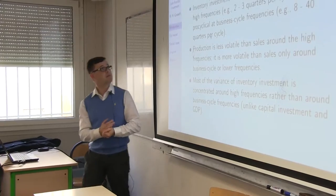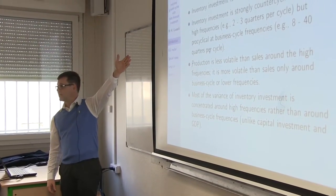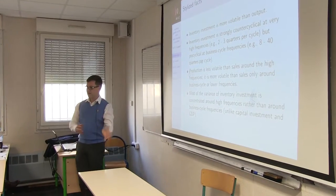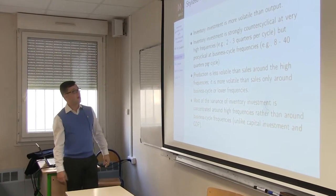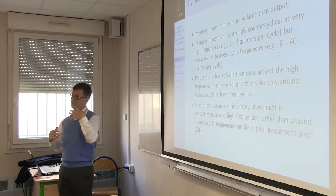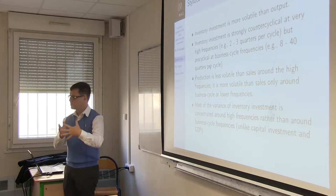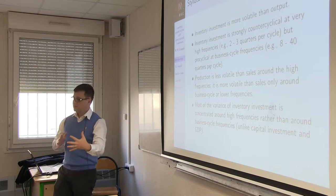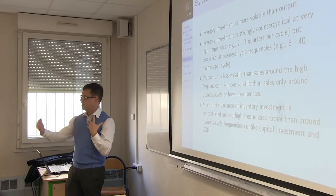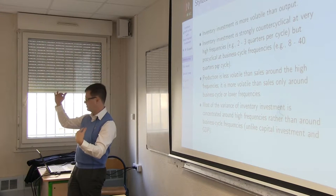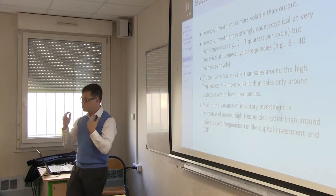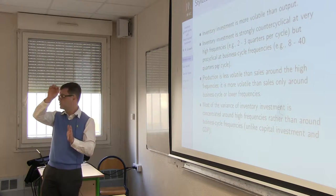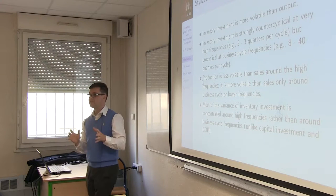The first stylized fact is that inventory investment is more volatile than output itself, and in particular more volatile than output minus inventory, which is just sales. It's counter-cyclical at high frequencies — a couple of quarters — but pro-cyclical at business cycle frequencies of eight to forty quarters. Inventories play at different time scales, and this concept will be important later in the model, as they behave differently at the two frequencies.